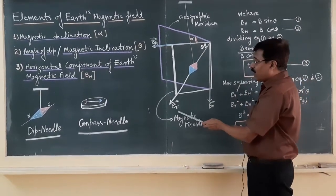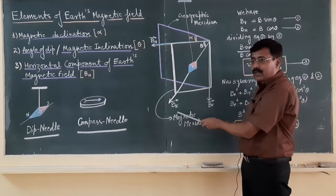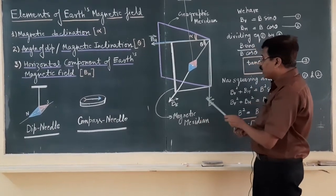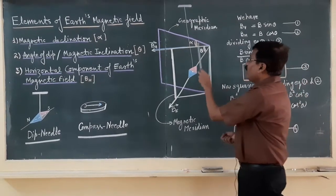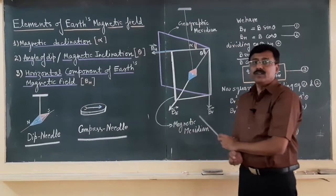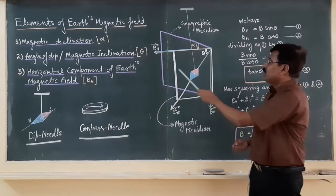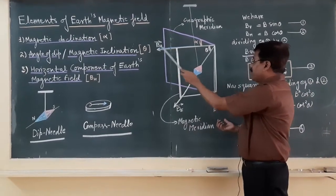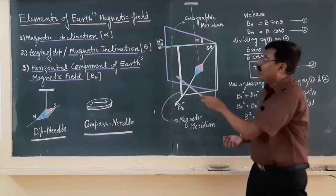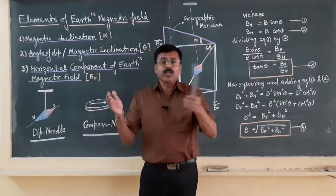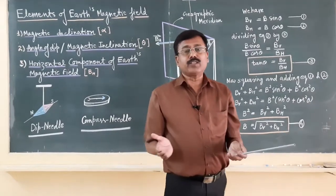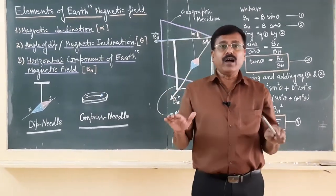Number three: the earth's magnetic field is a vector quantity. Any vector quantity can be resolved into vertical component BV and horizontal component BH. But we are preferring BH over BV for elements of the earth's magnetic field. Reason being, because we are performing most of the experiments parallel to the earth's surface.